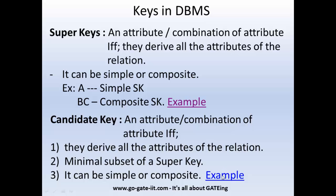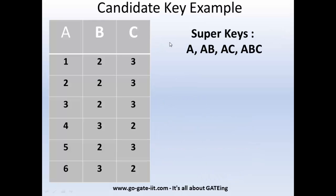Let us take an example to justify the candidate key definition. We have the same relation with attributes A, B, and C. For this given relation, we calculated the superkeys as A, AB, AC, and ABC. We need to calculate the candidate key for this given set of superkeys. As the definition says, it should be a minimal subset of the given superkeys.